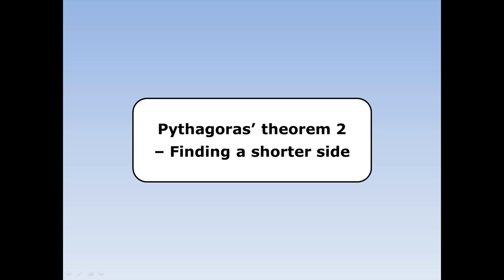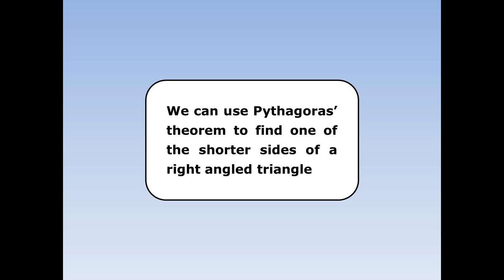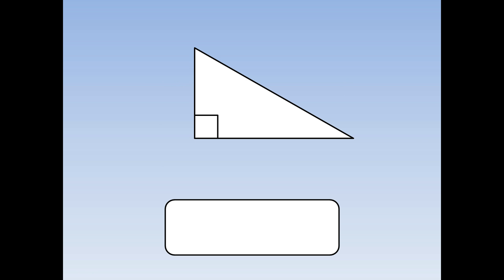Pythagoras' theorem 2: finding a shorter side. We can use Pythagoras' theorem to find one of the shorter sides of a right angle triangle. For any right angle triangle, I can label the two short sides A and B — it doesn't really matter which way round they go — and I can label the longest side, or the hypotenuse, as C. Then I can write Pythagoras' theorem as A squared plus B squared equals C squared, and this will help me find out one of the shorter sides.